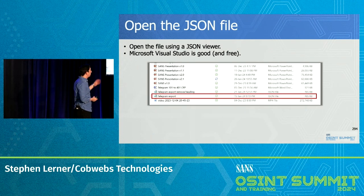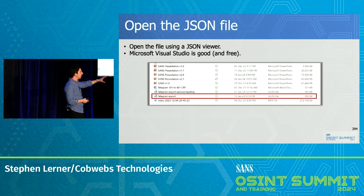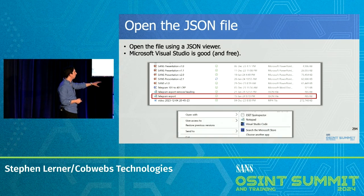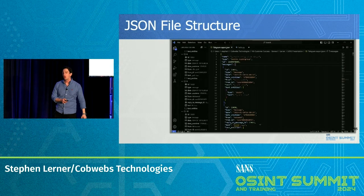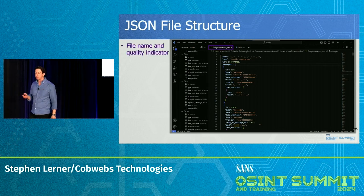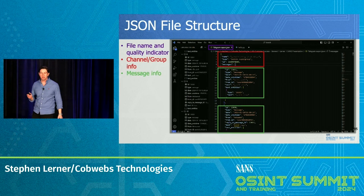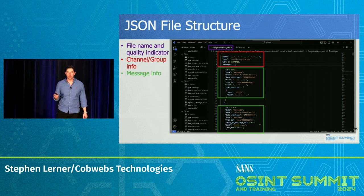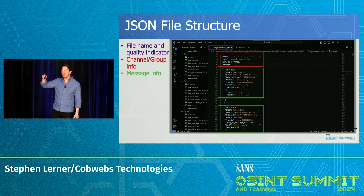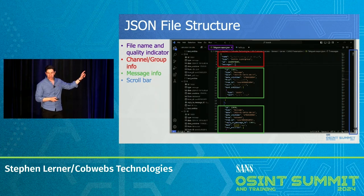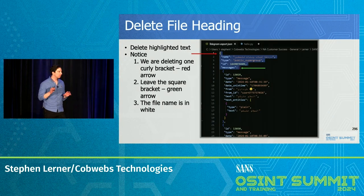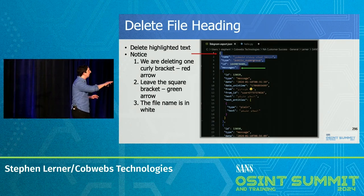Let's get into it. You have the JSON export from Telegram. Right-click and go to Visual Studio Code — you can use any JSON viewer, this is free from Microsoft. Open it up. This is what the structure looks like: you have the file name in purple, the channel info in red, and the message info in green. Each message has its own ID and different headers. In some cases you can see 'reply to' fields, in others you can't if it's not a reply.